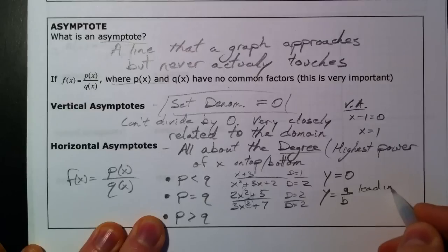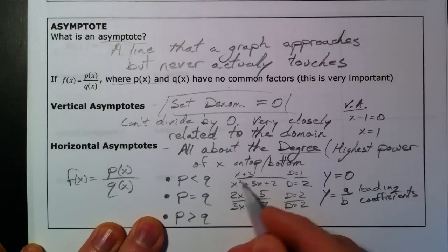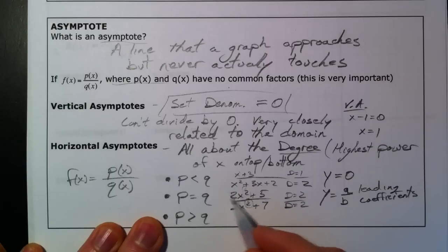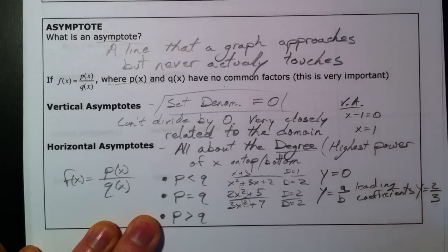Leading coefficients. Because the 5 and the 7 don't matter as much as squaring this number. And so, you're going to be squaring the same number when you plug in a huge number for x. And so, the top is going to be twice as big as 3 times the bottom. So, this ratio is going to stay the same. And so, our ratio is still going to be y equals 2 over 3.